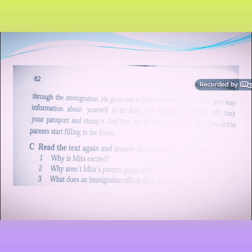Mita's uncle brings forms for all of them to fill in before going through immigration. He gives one to Mita and says: you have to give some information about yourself in the form. The immigration officer will check your passport and stamp it. And then you are ready to travel. Mita, Zara and her parents start filling the forms.